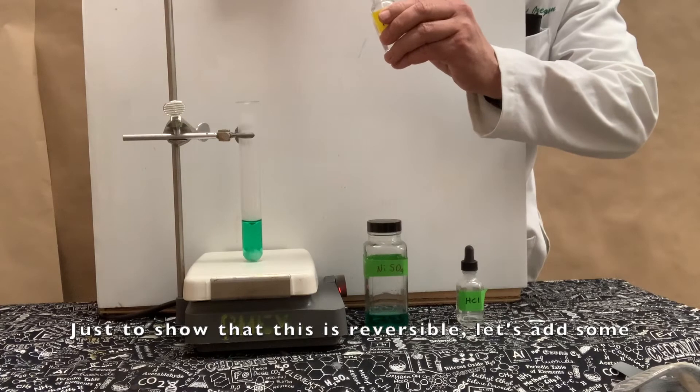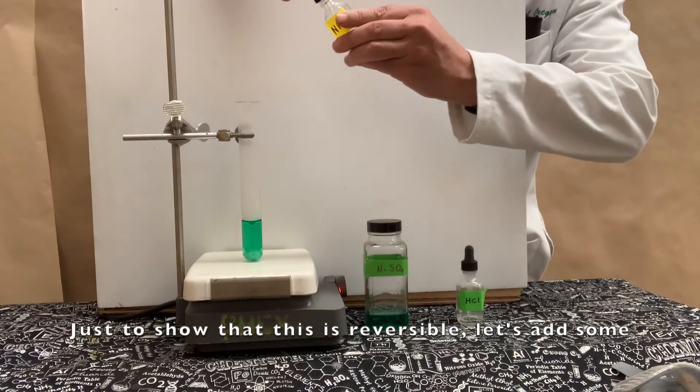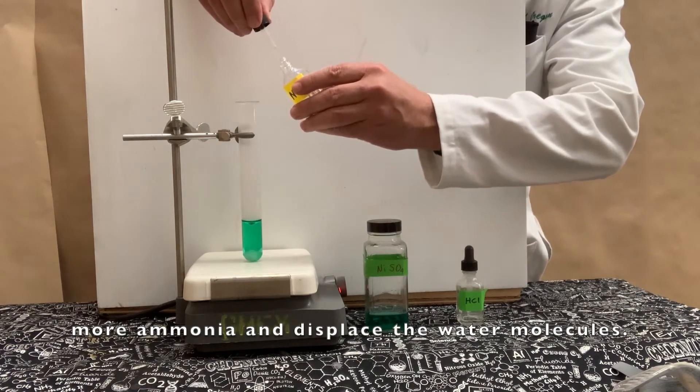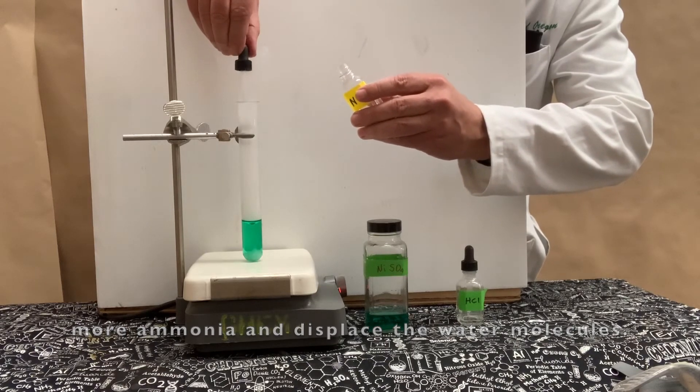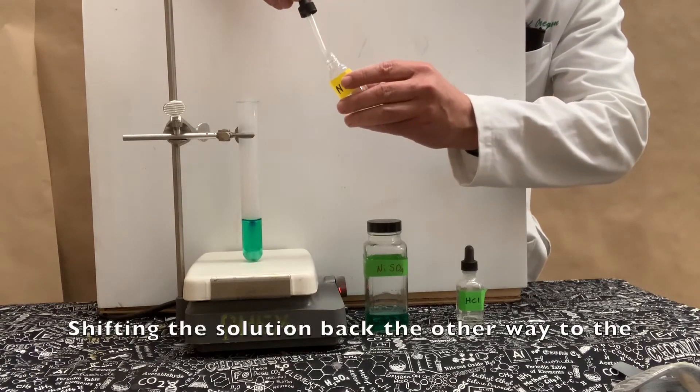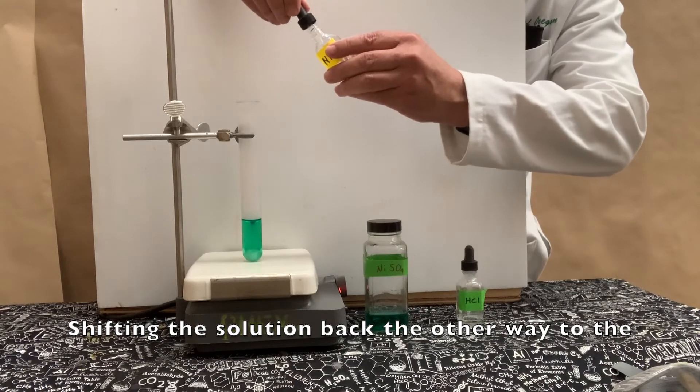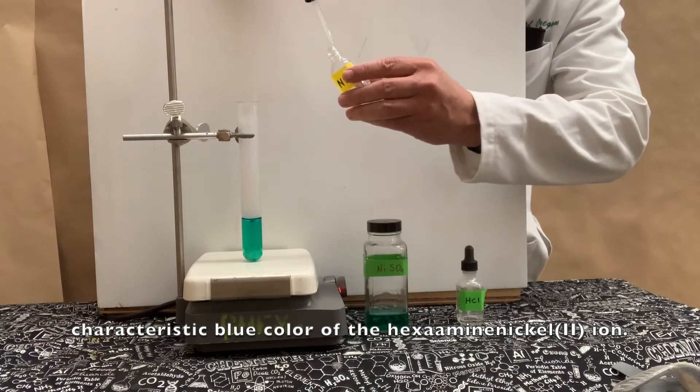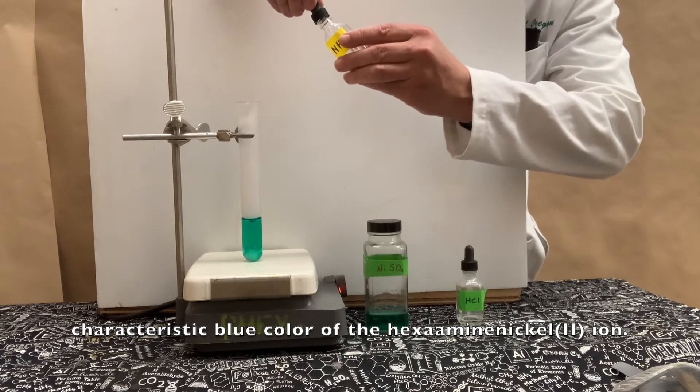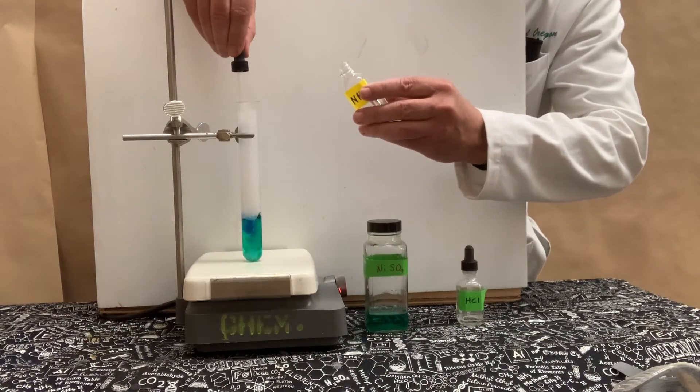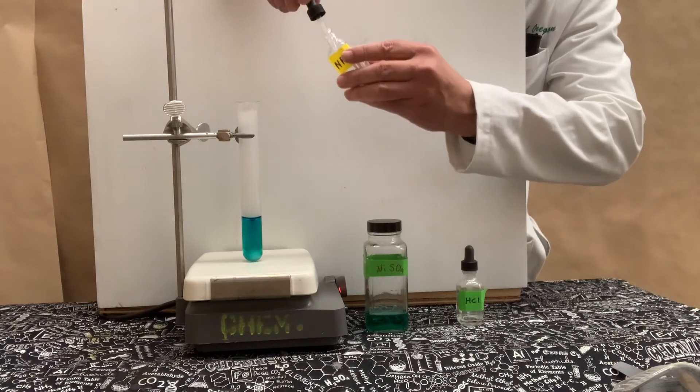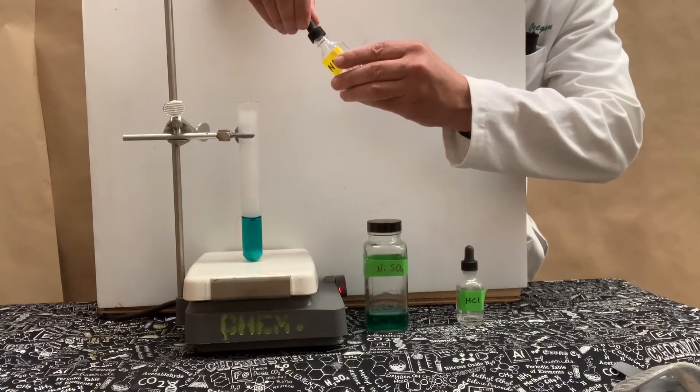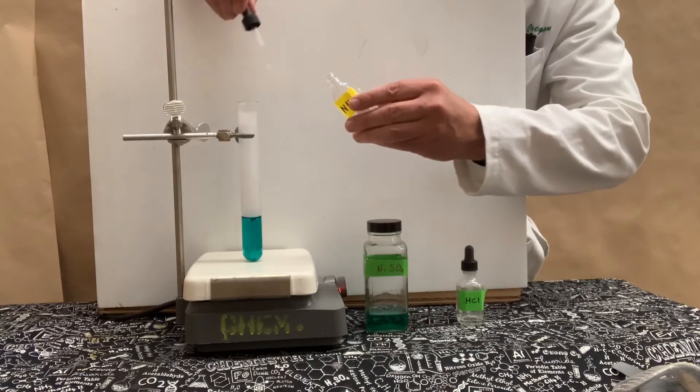Just to show that this is reversible, let's add some more hydrochloric acid and remove that ammonia, shifting the solution back the other way to the characteristic blue color of the hexamine nickel(II) ion.